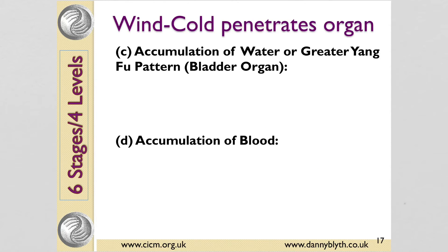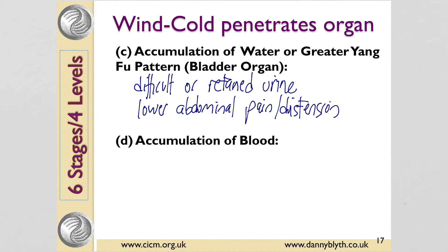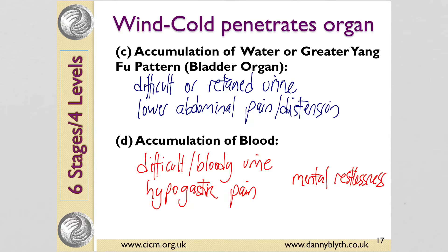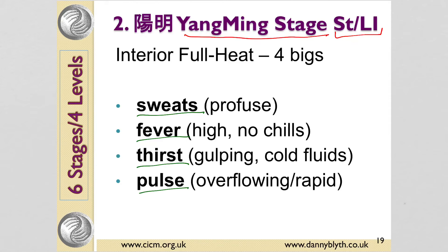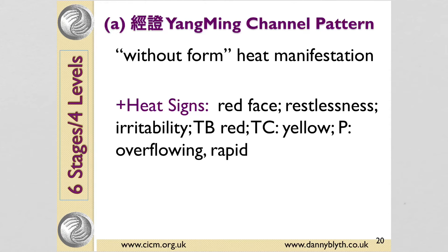The Shang Han Lun also talks about accumulation of water, or the greater Yang Fu pattern, where it affects the bladder organ as well as the channel, and also accumulation of blood. If the pathogen penetrates deeper, it goes to the Yang Ming stage — the stomach and the large intestine. Think of a cold turning into a chest infection, or a chill turning into the flu. Here we get the four bigs: big sweating, big fever, big thirst, and big pulse — an overflowing rapid pulse.